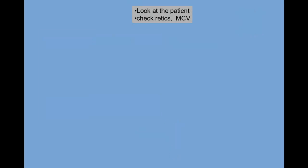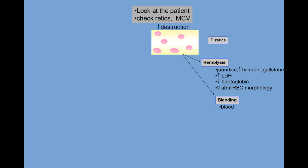Are they bleeding, jaundiced? Check the reticulocyte count and the mean cell volume, MCV. If the reticulocyte count is high, the underlying cause of the anemia is increased destruction. There are only two possibilities here: either hemolysis or bleeding. The distinction is usually easy to make.